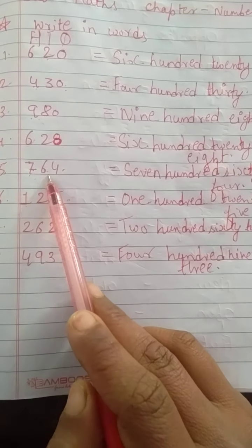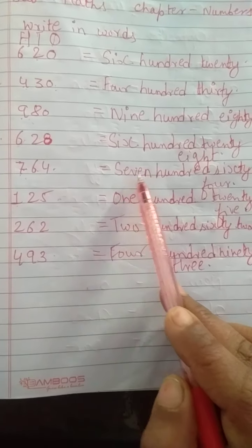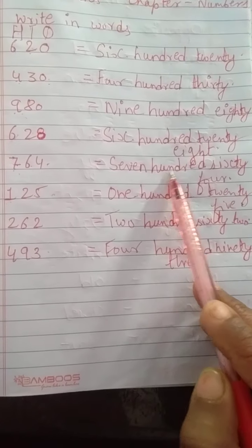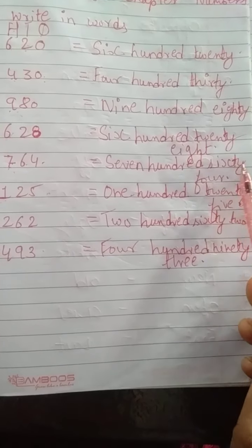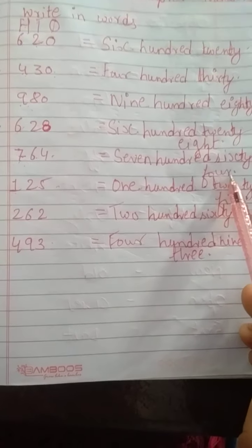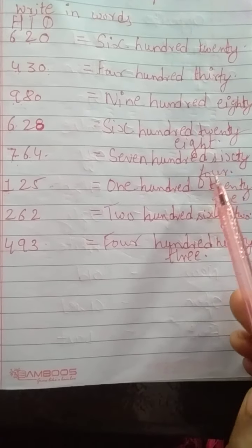Next is 764. S-E-V-E-N 7 H-U-N-D-R-E-D 100. S-I-X-T-Y 60 and the spelling of 4 is F-O-U-R 4. 764.